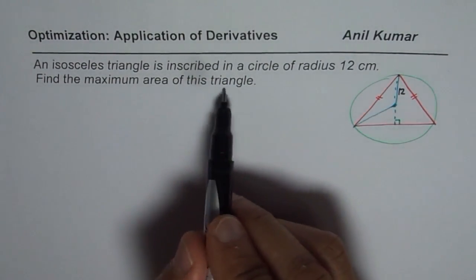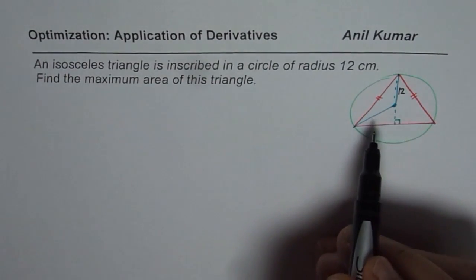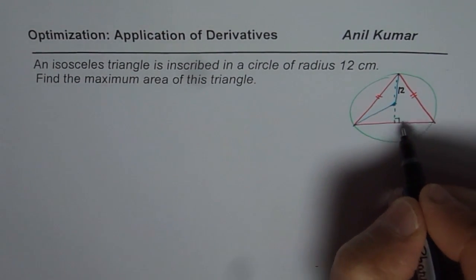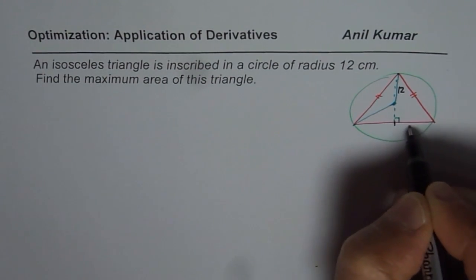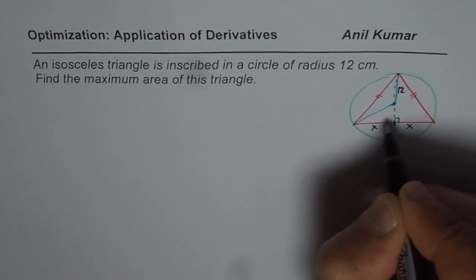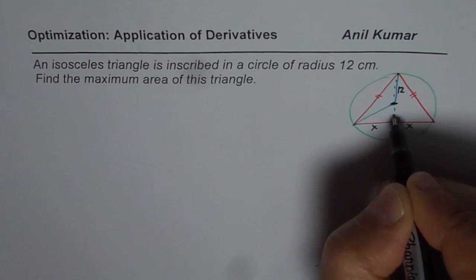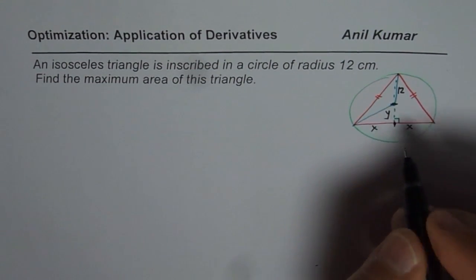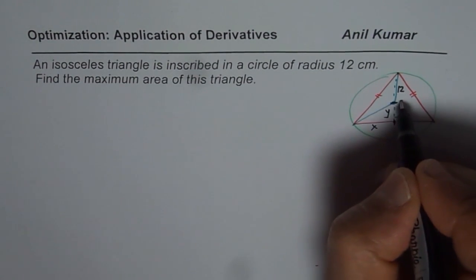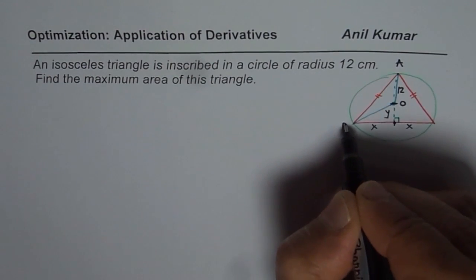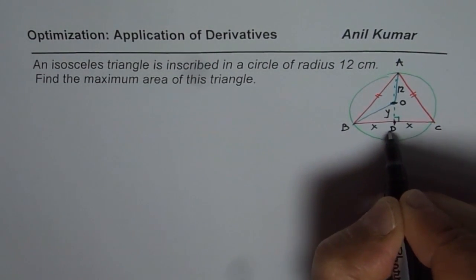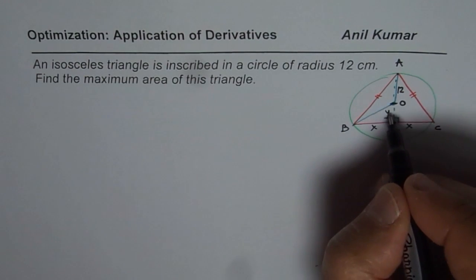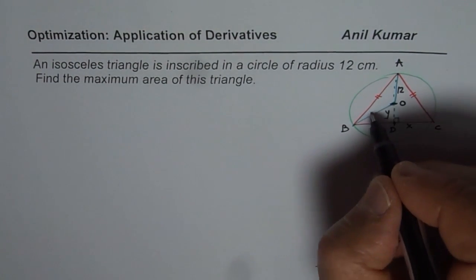We need to find the maximum area of a triangle inscribed in a circle. Let us say this side of the triangle is X, and this is also X, and let us take the distance from the center to this end as Y. Now how are X and Y related? Let me label the points. Let's call this point D.